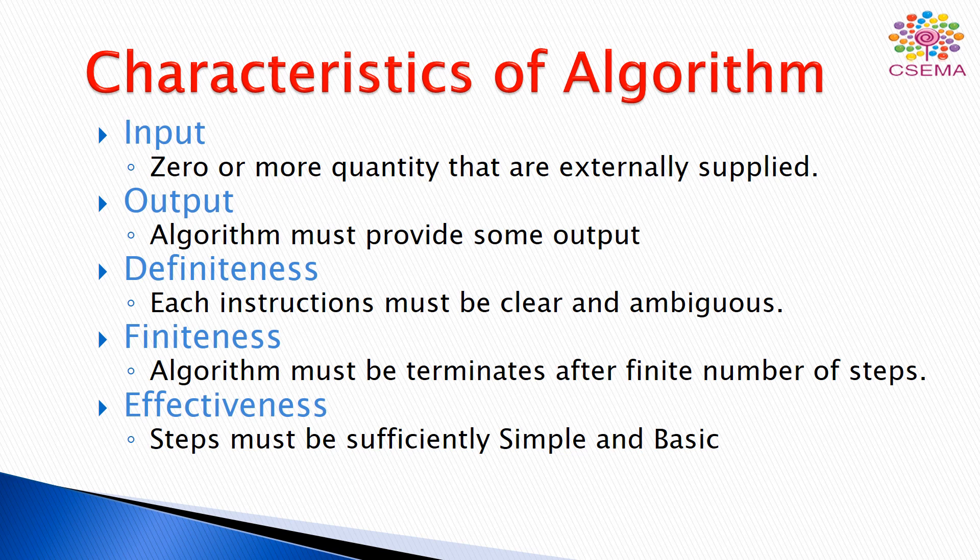The fourth important property of an algorithm is finiteness, meaning an algorithm must terminate after a finite number of steps. When we design an algorithm it must terminate. Generally when we write a loop program using a loop and the loop continues executing without producing any output, that means the algorithm must be terminated after a finite number of steps.